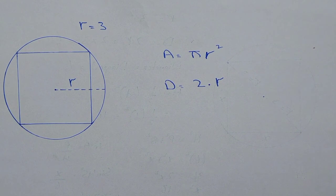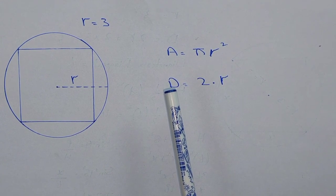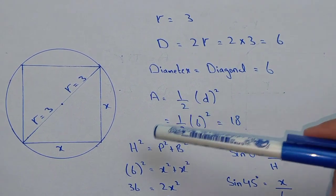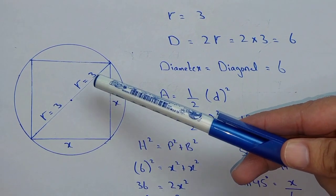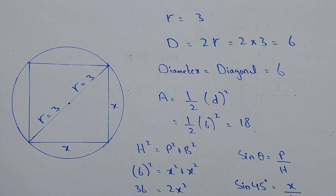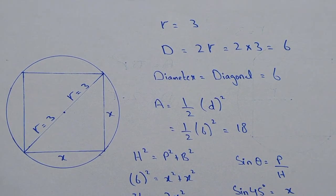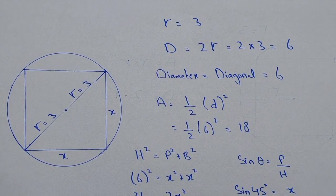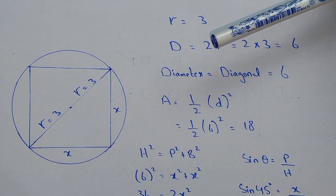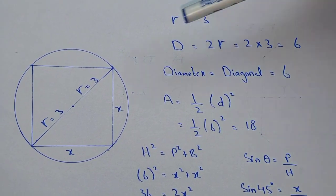The area of the circle is pi r squared. The diameter of the circle will be 2 into radius. You can see here that the radius is shown and this is the diameter. If we know the diameter of the circle, we will also know the diagonal of the square. Here the diagonal of the square is 6, because the diameter is 2 into r, which equals 6. So diameter equals diagonal, that is 6.